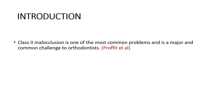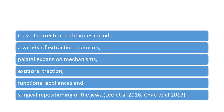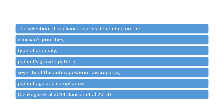Class II malocclusion is generally one of the most common malocclusions and poses major challenges to orthodontists. Correction generally includes a variety of protocols — extraction protocols, palatal expansion mechanisms, dental extractions, functional appliances, and in adult patients where growth is not possible, surgical repositioning. The chosen mechanism depends on the clinician's priorities, the type of anomaly, presence of growth, severity of the anterior-posterior discrepancy, and patient age and compliance.